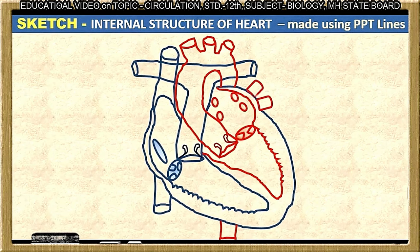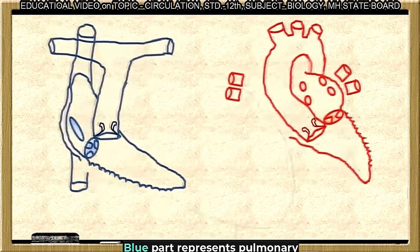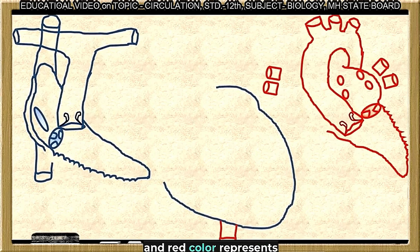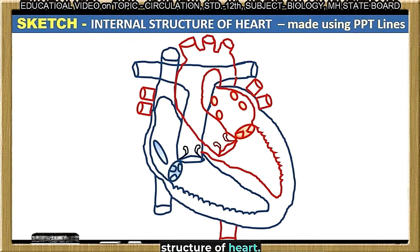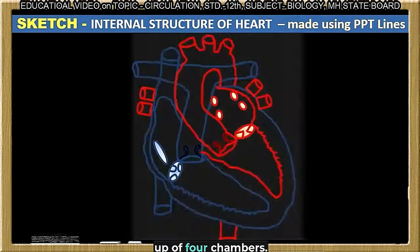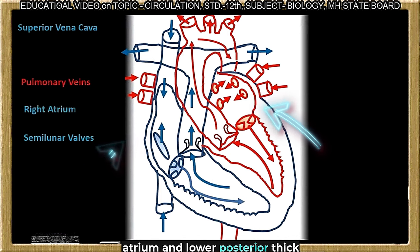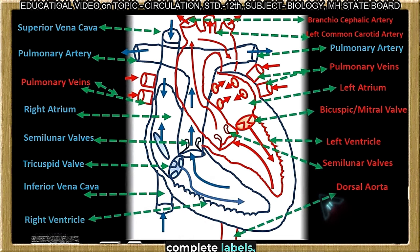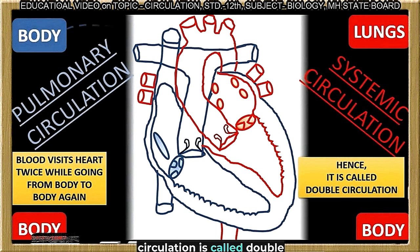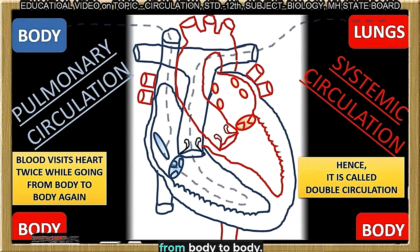To understand these two parts more clearly, here are the separated parts of the heart. The blue part represents pulmonary and the red color represents systemic circulation, which together make the complete internal structure of the heart. Basically the heart is made up of four chambers: two anterior thin-walled receiver chambers called atria, and lower posterior thin-walled propelling chambers called ventricles. Remember that human circulation is called double circulation because blood visits the heart twice while going from body to body.